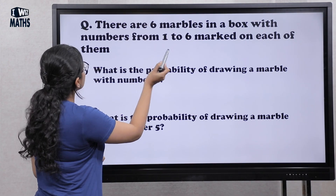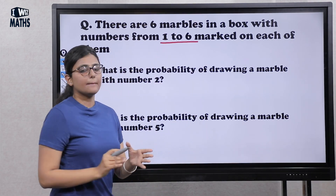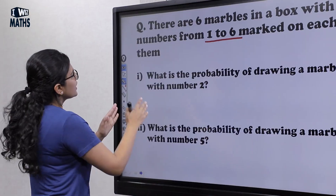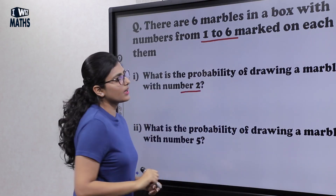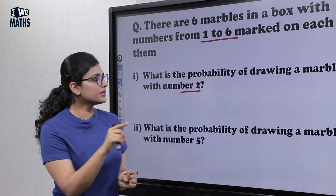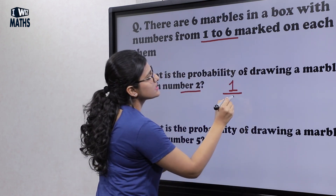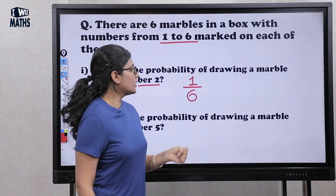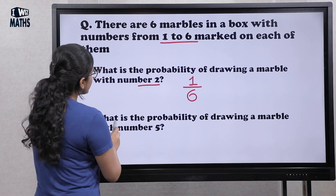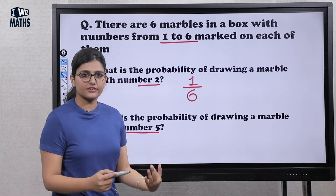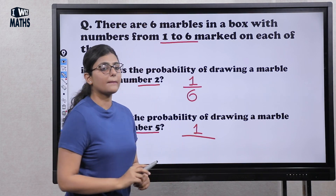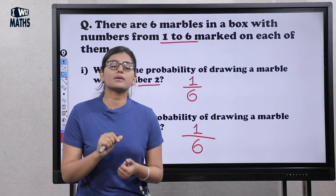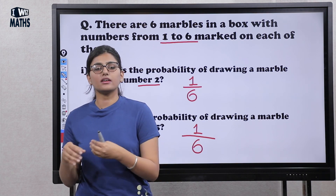The question says: there are 6 marbles in a box with numbers from 1 to 6 marked on each of them. What is the probability of drawing a marble with the number 2? We need number 2, which is 1 of the 6 marbles. So the probability is 1 by 6. Similarly, what is the probability of drawing a marble with number 5? That is also a single number out of 6, so the probability is 1 by 6. Every number from 1 to 6 has a probability of 1 by 6.